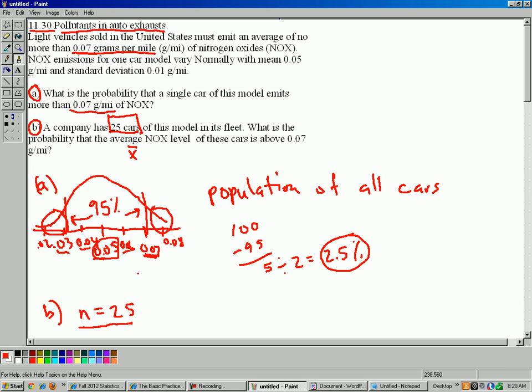And so it's not very likely. First of all, there's only a 2.5% chance that one car is going to fail the test. So the probability of the average of 25 cars being above 0.07 is much smaller than that.